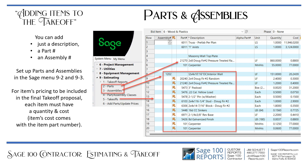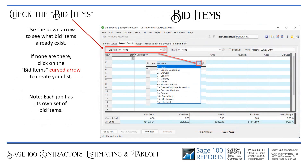For item pricing to be included in the final takeoff proposal, each item must have a quantity and a cost. The cost comes automatically usually from the item part number. Use the down arrow to see what bid items already exist. If none are there, click on the bid items curved arrow to create your own list.